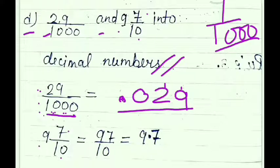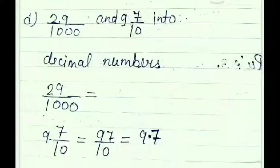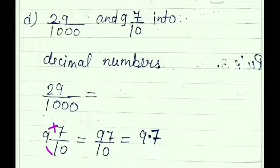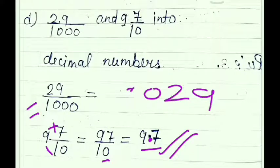For 9 whole 7 upon 10: first convert to improper fraction — 10 × 9 = 90 plus numerator 7 gives 97 upon 10. Denominator is 10, so place decimal after 1 digit. Answer is 9.7. So 29 upon 1000 = 0.029 and 9 whole 7 upon 10 = 9.7.